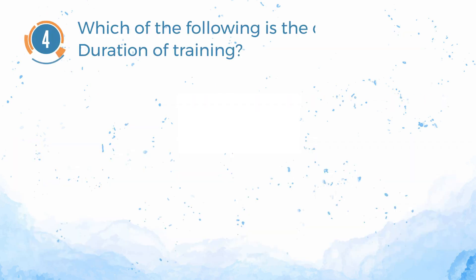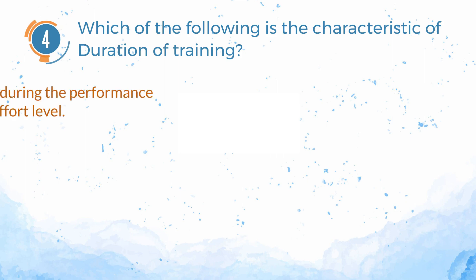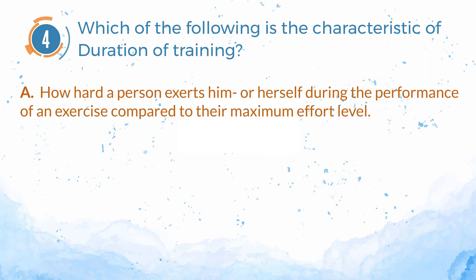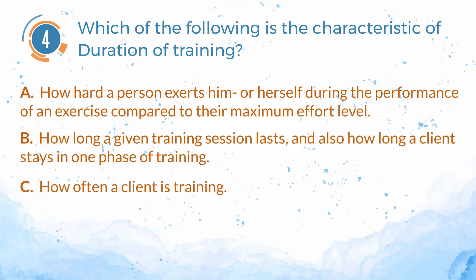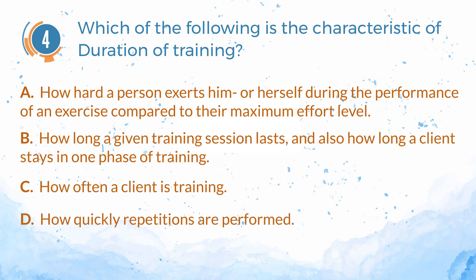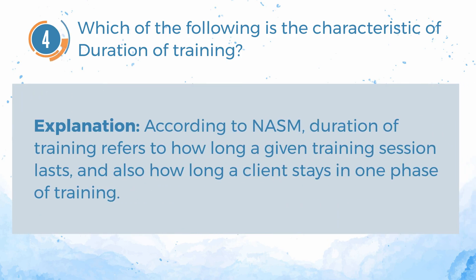Number 4. Which of the following is the characteristic of duration of training? A. How hard a person exerts him or herself during the performance of an exercise compared to their maximum effort level? B. How long a given training session lasts, and also how long a client stays in one phase of training? C. How often a client is training? D. How quickly repetitions are performed? The answer is B. According to NASM, duration of training refers to how long a given training session lasts, and also how long a client stays in one phase of training.